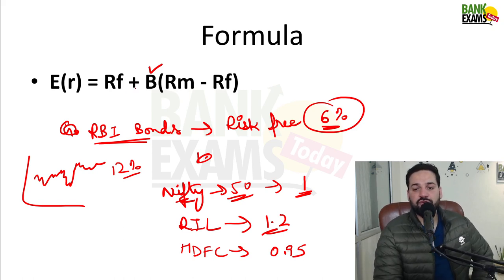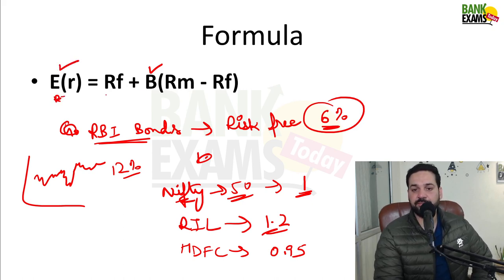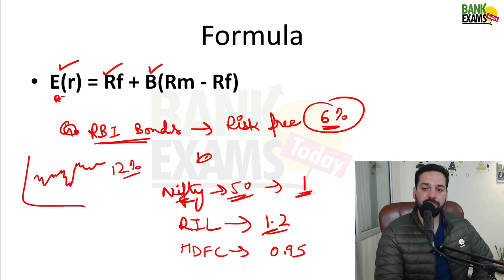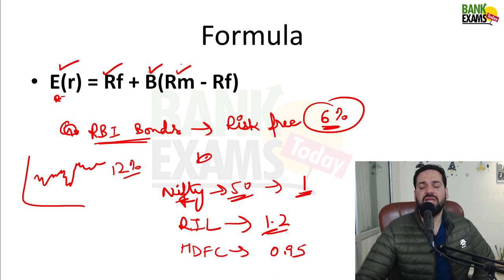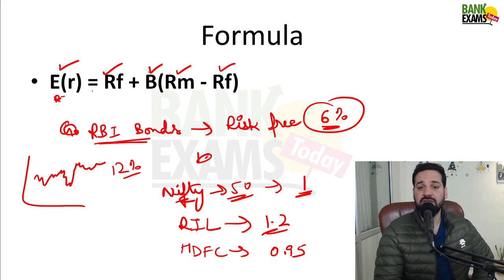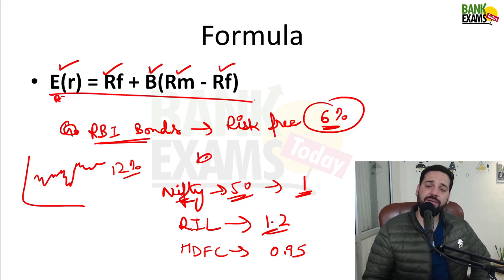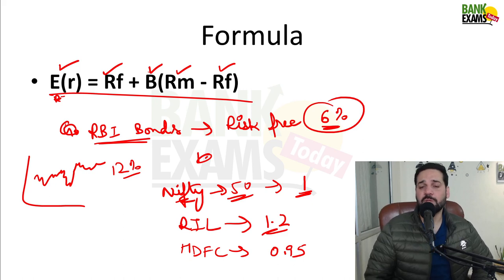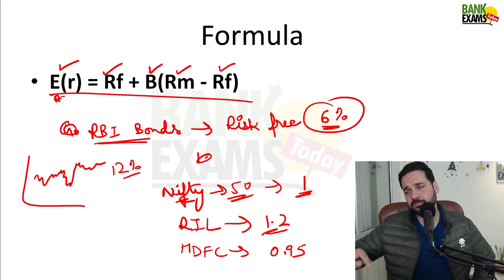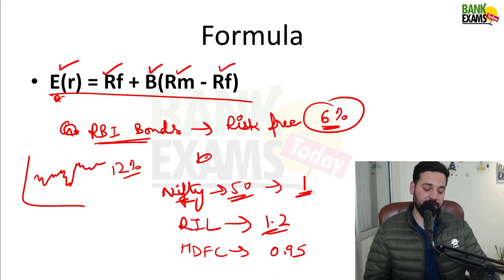So the simple CAPM formula: Expected return of the company (e.g., Reliance Industries) = RF (risk-free return) + B (beta) × (RM − RF), where RM is the market return (in this case Nifty's return) minus risk-free return. Please remember this formula — it is very important. Many questions repeat in exams.